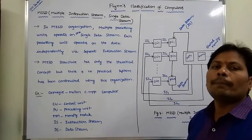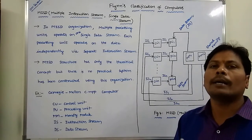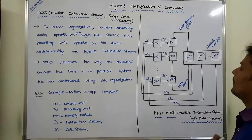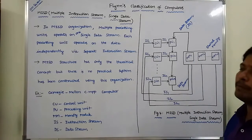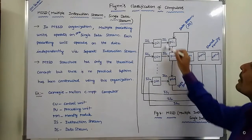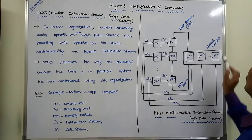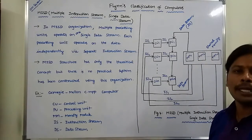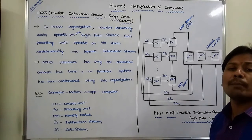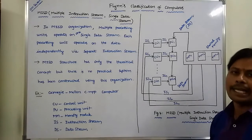The third type of computer is the MISD computer — Multiple Instruction Stream, Single Data Stream. The MISD architecture mainly consists of n number of control units, n number of processing units, and one shared memory unit. This shared memory unit can be divided into several memory modules, from memory module 1 to memory module n.